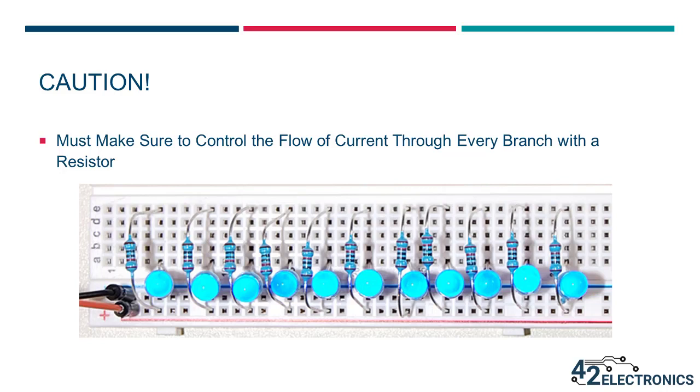However, you must be careful to control current flow through each branch using a resistor. Any one resistor will only control current flowing through that branch of the circuit with that LED. If a branch has an LED but no resistor, the LED could burn out due to excess current.